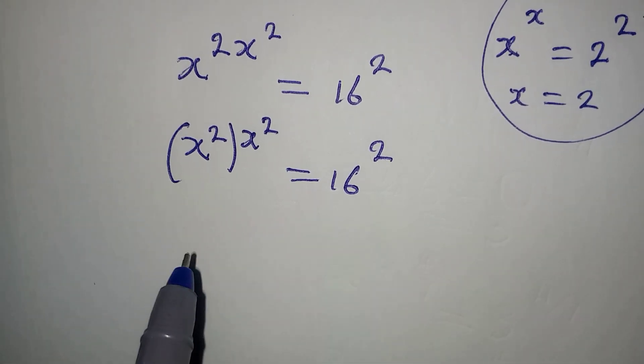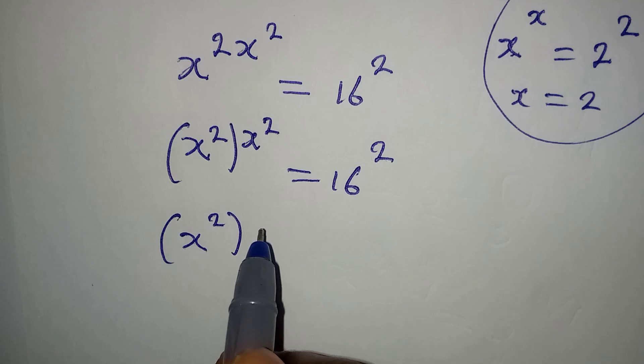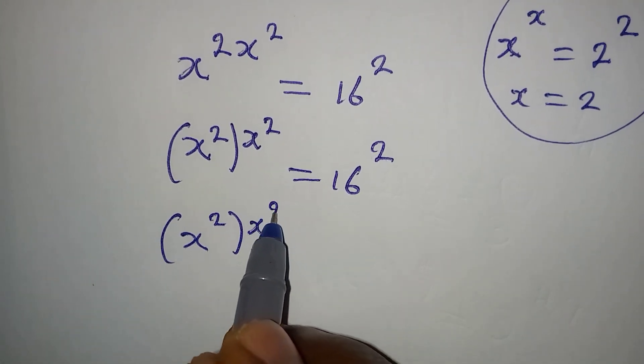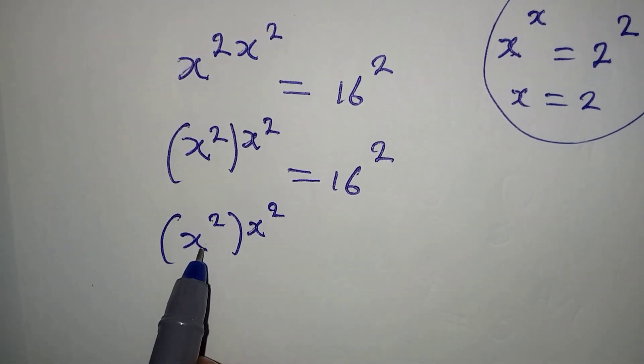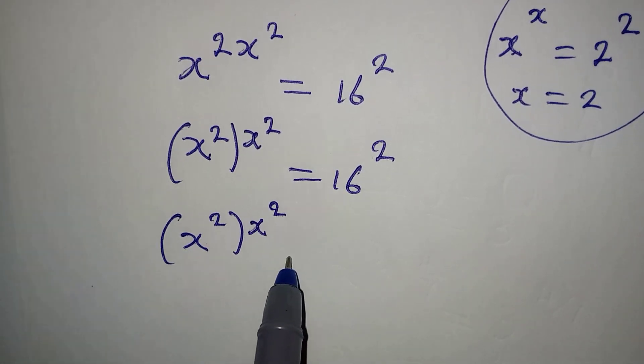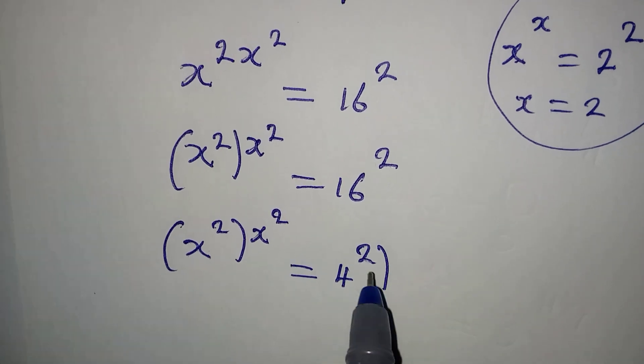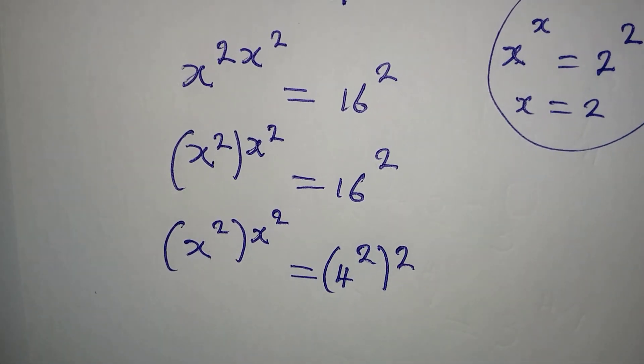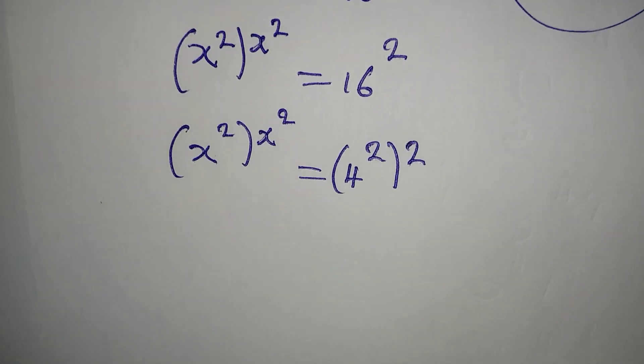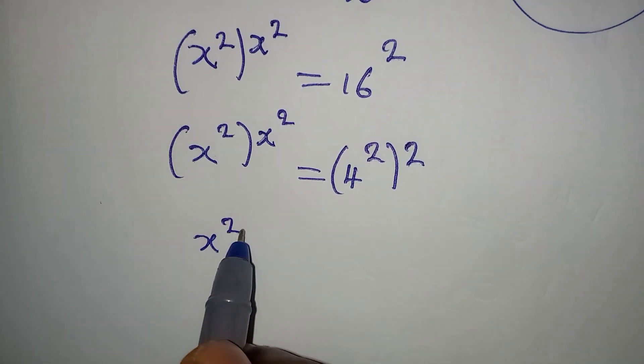From here, x to the power of 2 and then x to the power of 2, this becomes the base and this becomes the power. But then this is equal to 16 which is 4 squared, then to the power of 2.